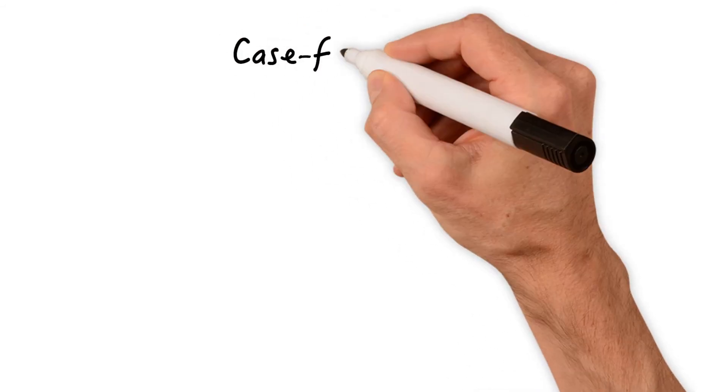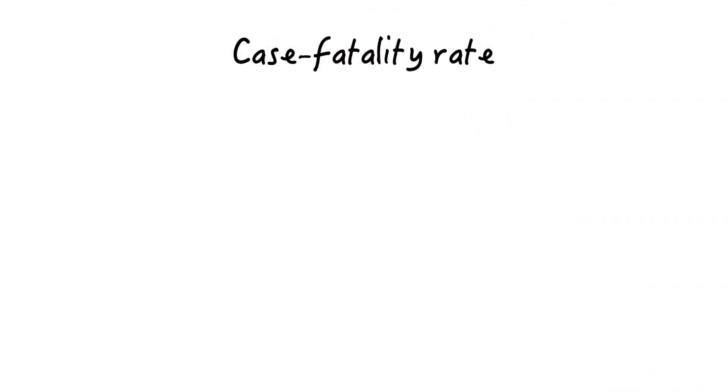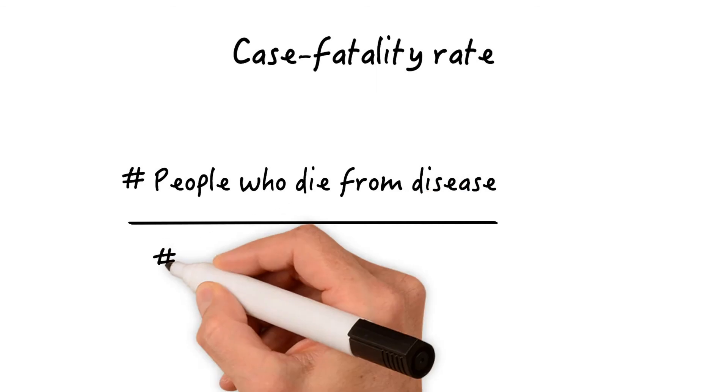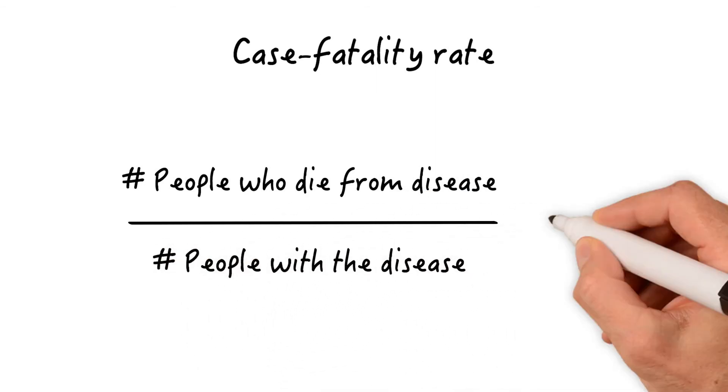Now, let's turn to case fatality rate. As we have learned in the previous lessons, case fatality rate is calculated as the number of people who die from a disease divided by the number of people with the disease times 100.